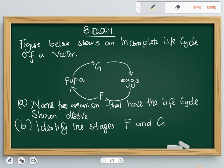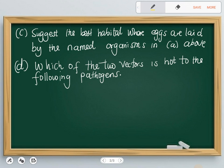So you need to start asking yourself as you are looking at the question, which type of vector? Name two organisms that have the life cycle shown above. Well, two organisms that have got this type of metamorphosis are only a mosquito and a housefly. So the first organism is a housefly and the second one is a mosquito.